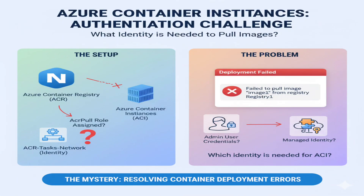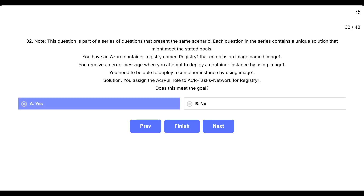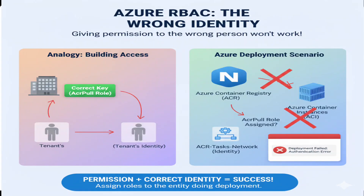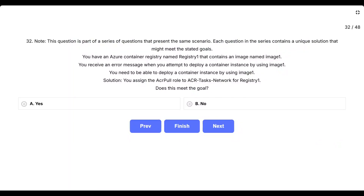This question tests whether assigning the AcrPull role to ACR Tasks Network will resolve container instance deployment errors. We need to understand what identity is actually needed for container instance authentication with Azure Container Registry. The options are A, yes, or B, no. Think of this like giving someone permission to enter a building, but giving that permission to the wrong person. Even if the permission level is correct — AcrPull for reading images — if you're not giving it to the right identity that will actually be used for deployment, it won't solve the problem. The correct answer is no.